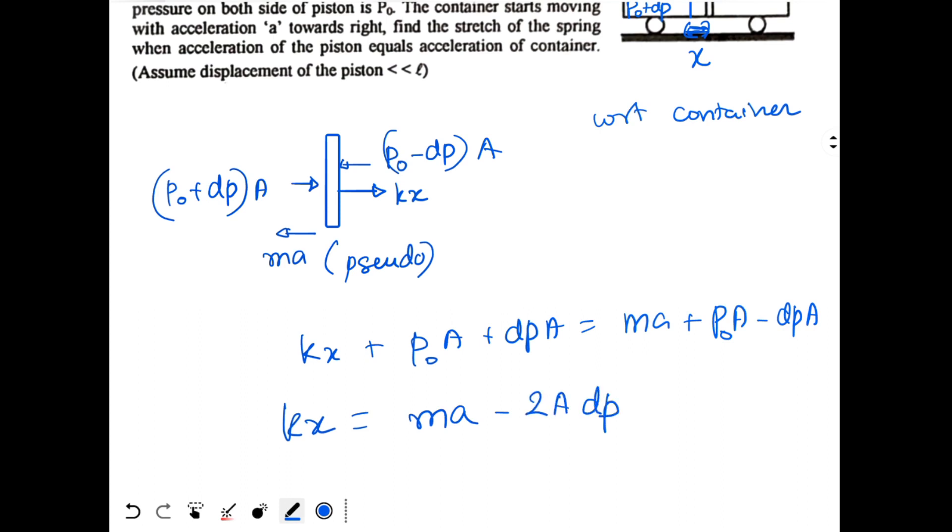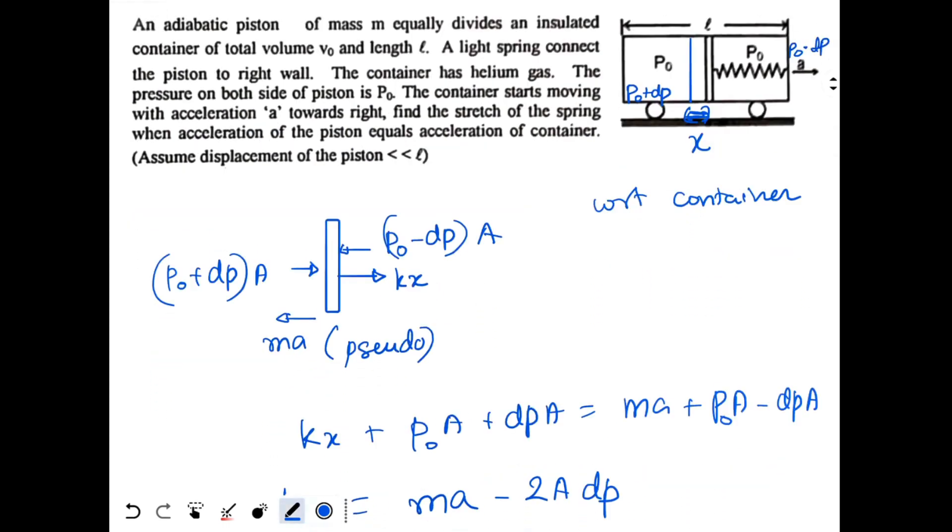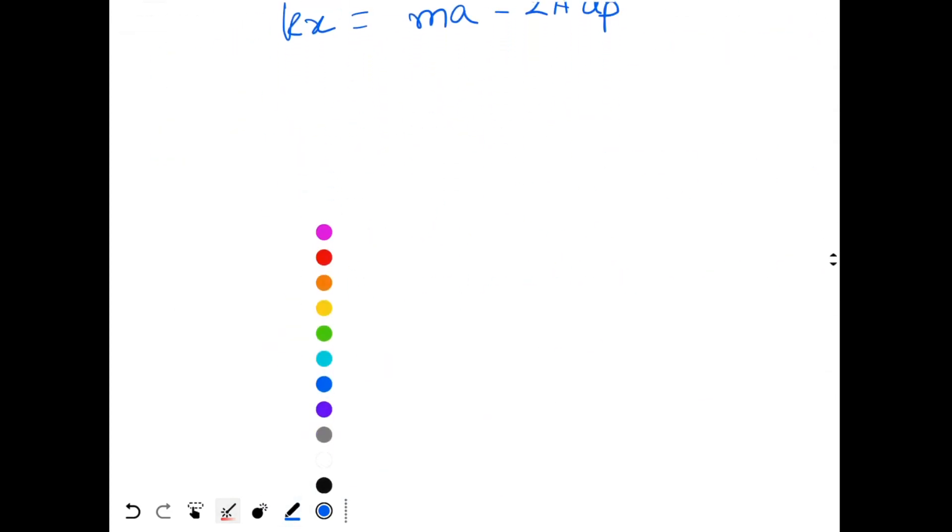So basically if I can find the value of change in pressure I can solve this question. Now how do you find the change in pressure? The first hint that we have is that there is no exchange of heat. So the two gases will undergo adiabatic process. So let's write the equation for adiabatic process. For adiabatic process, PV power gamma is constant.